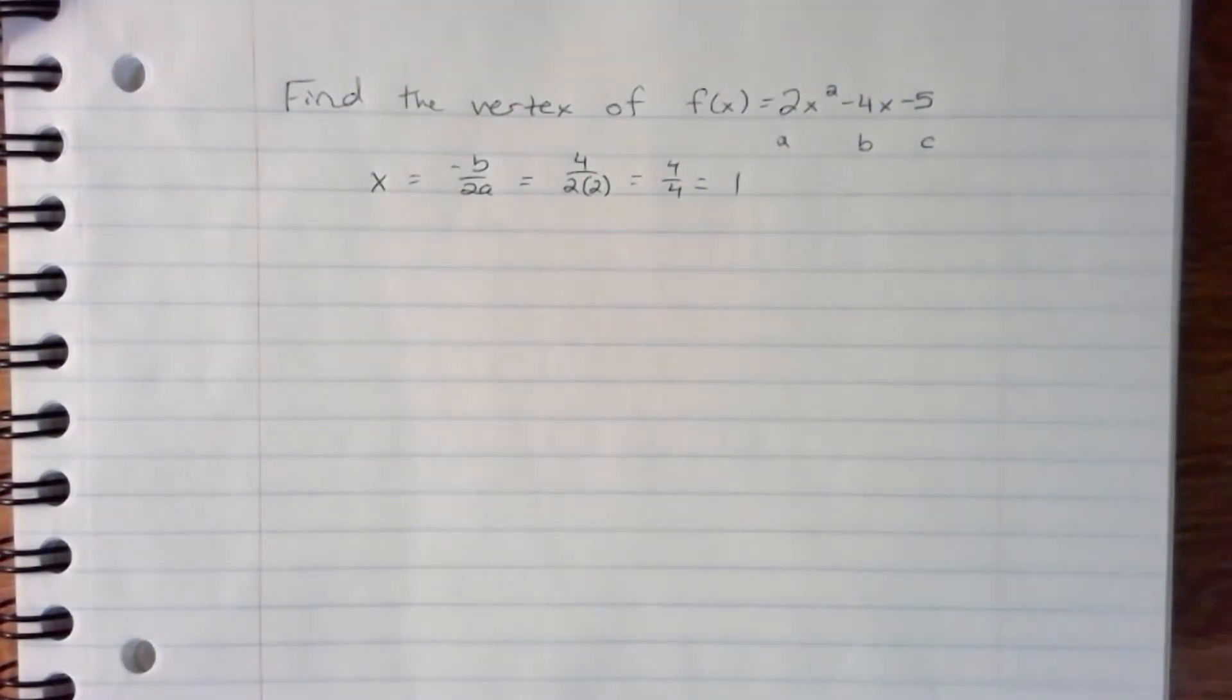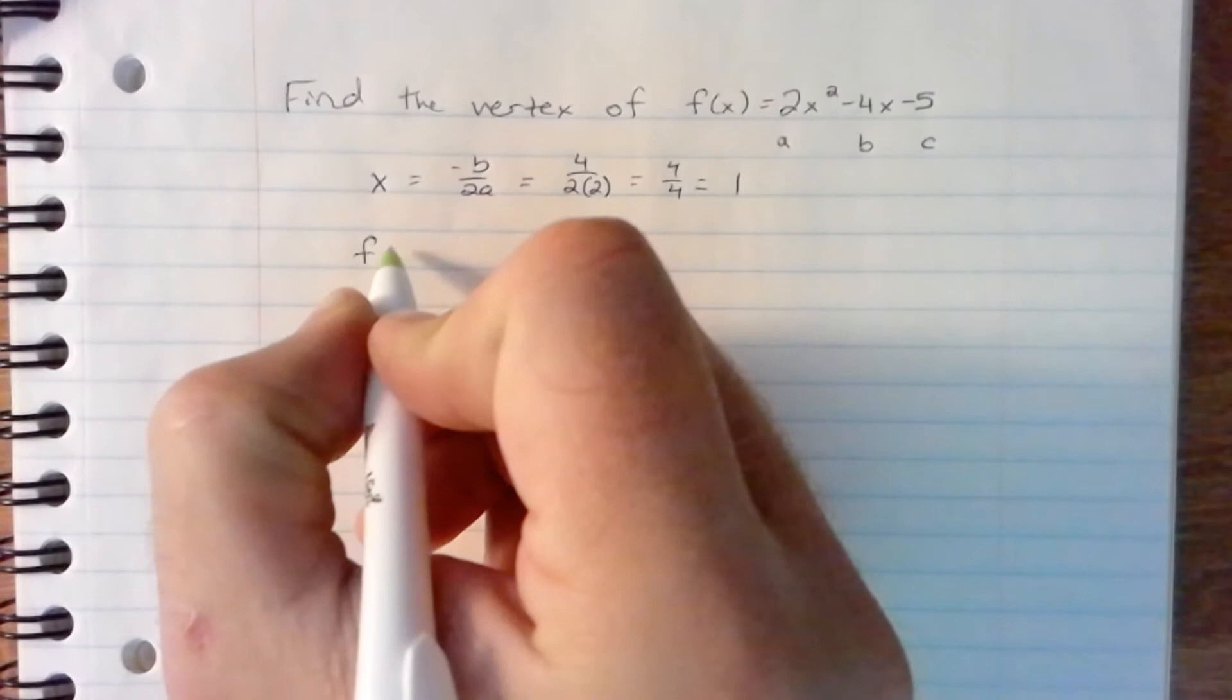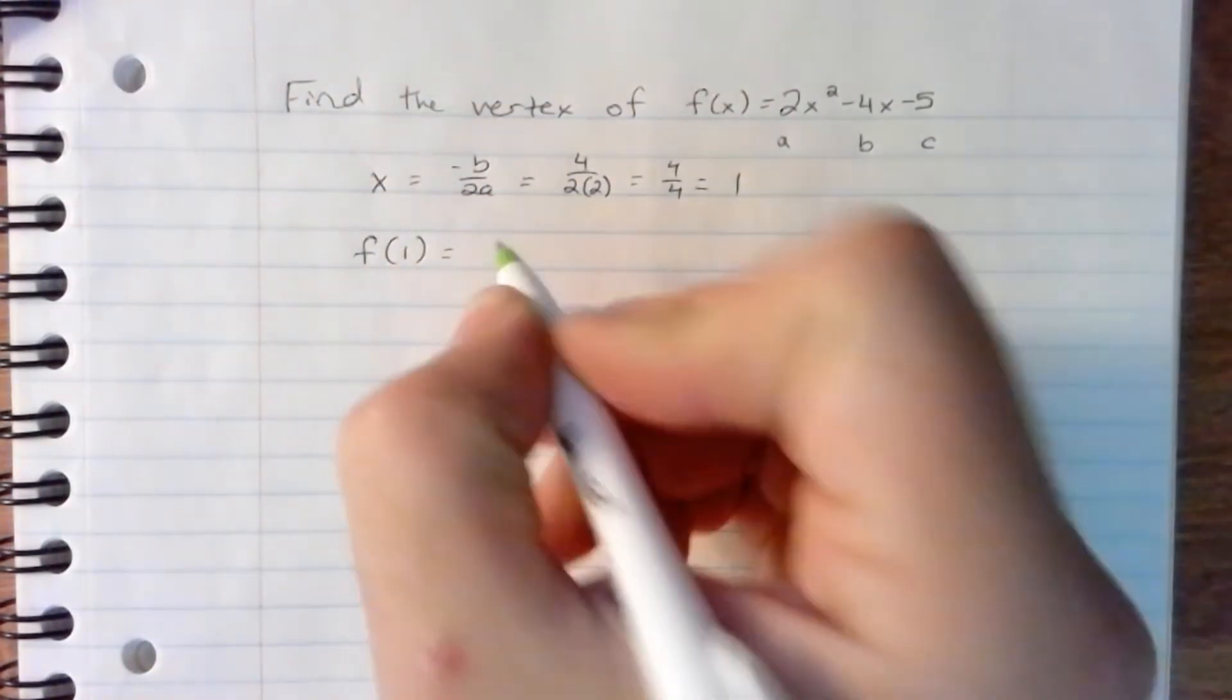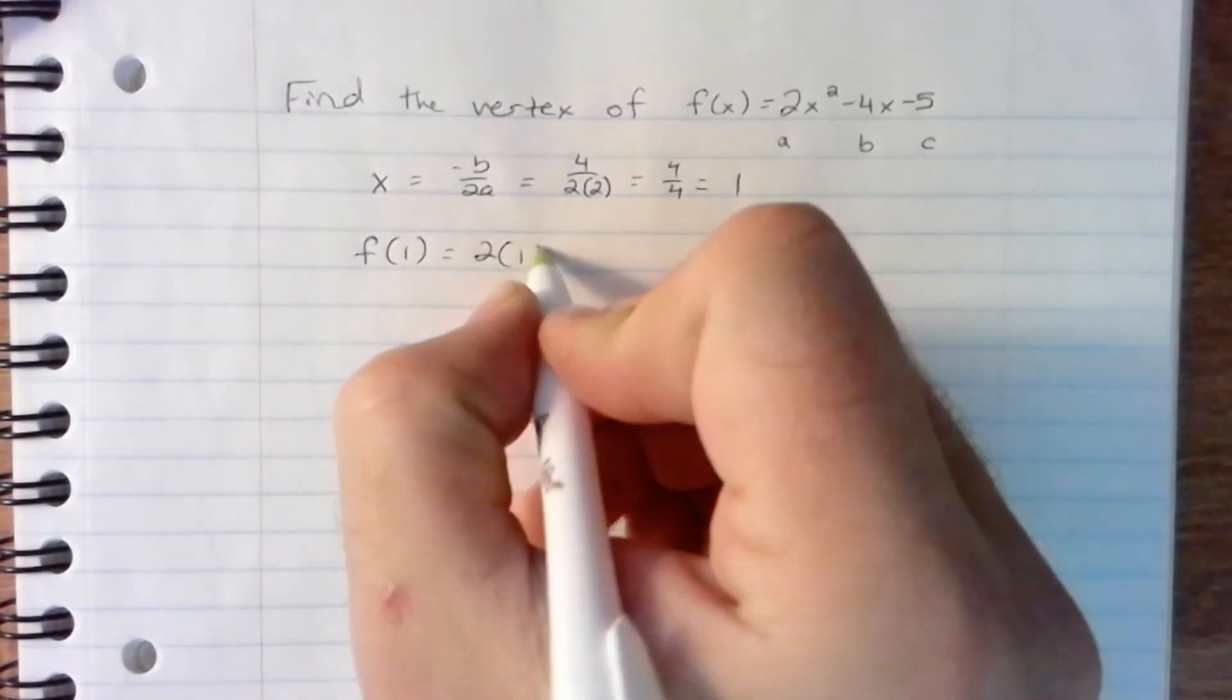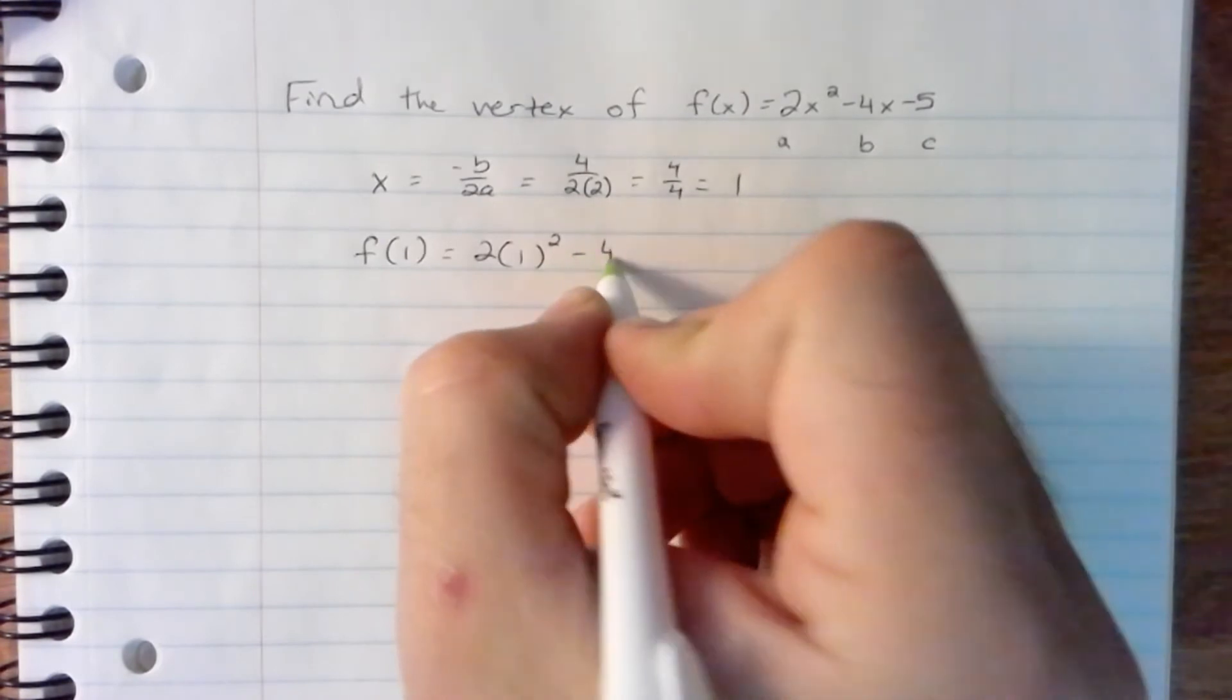We then take that x-coordinate, plug it into the original function. f of 1 equals 2 times 1 squared minus 4 times 1 minus 5.